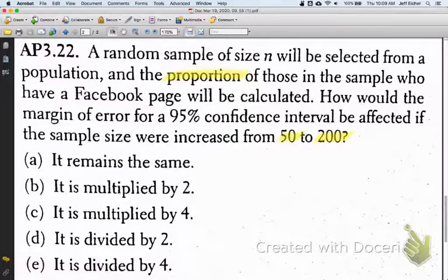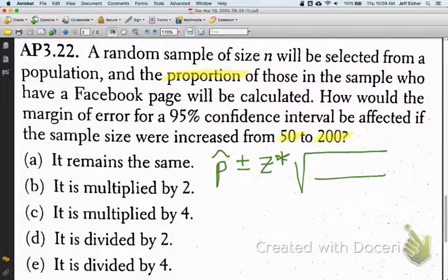So, with this type of confidence interval, our sample proportion is our point estimate, plus or minus z star, times the square root of p hat, 1 minus p hat, over n.